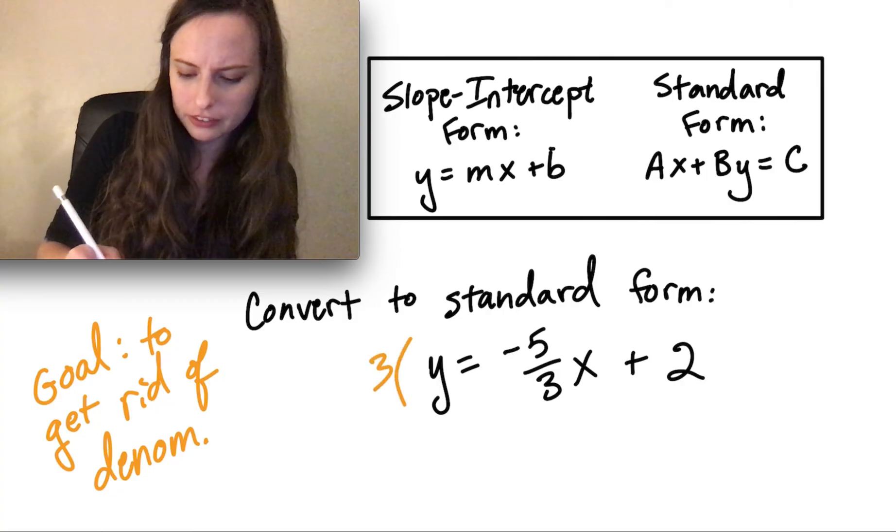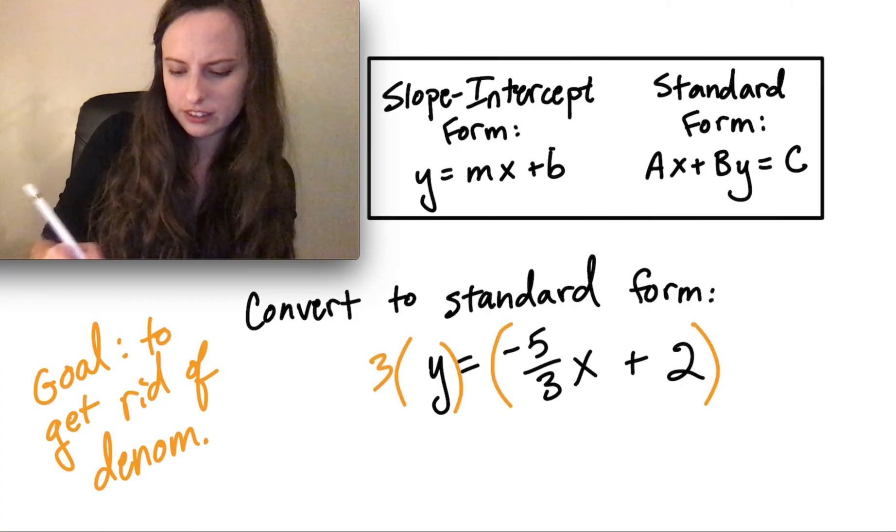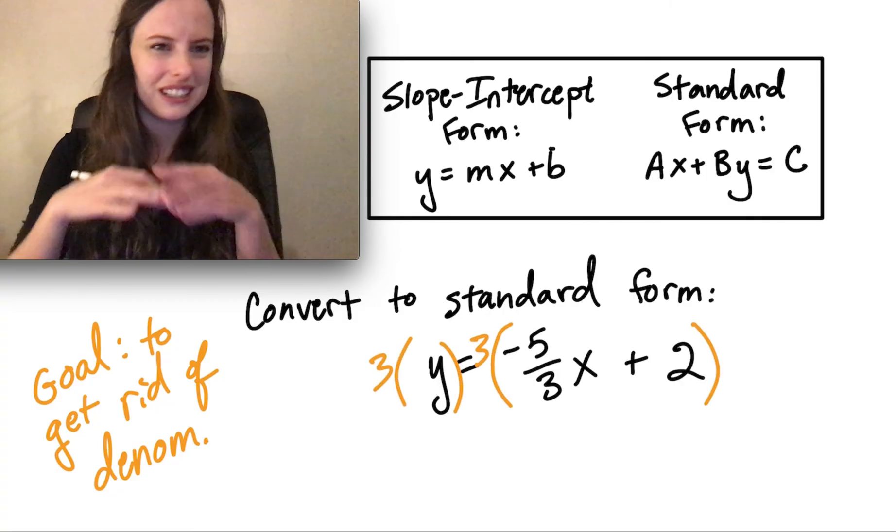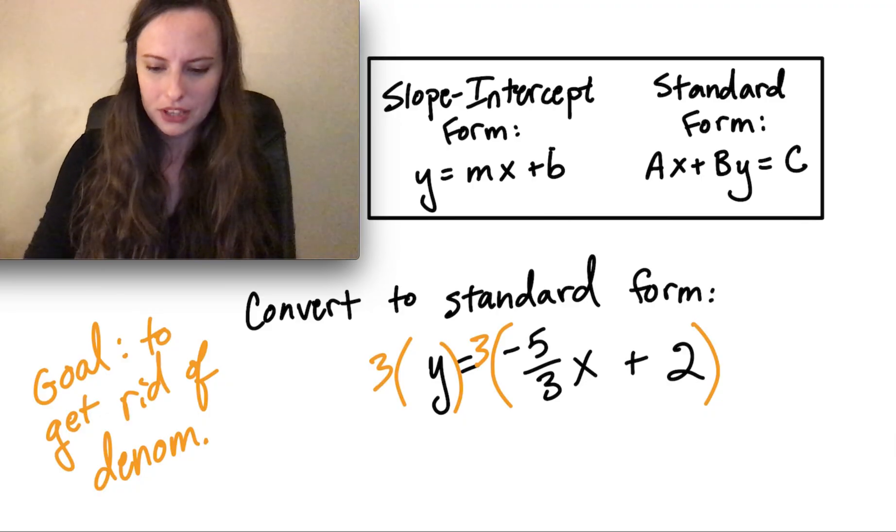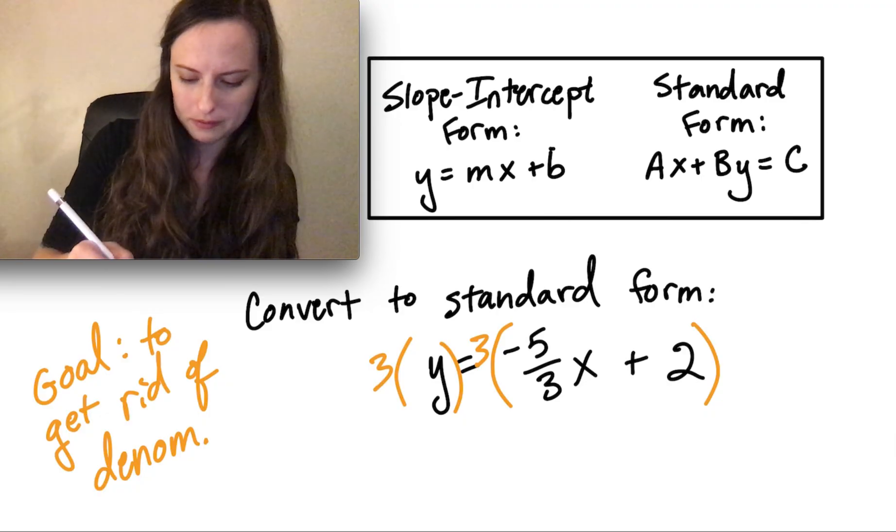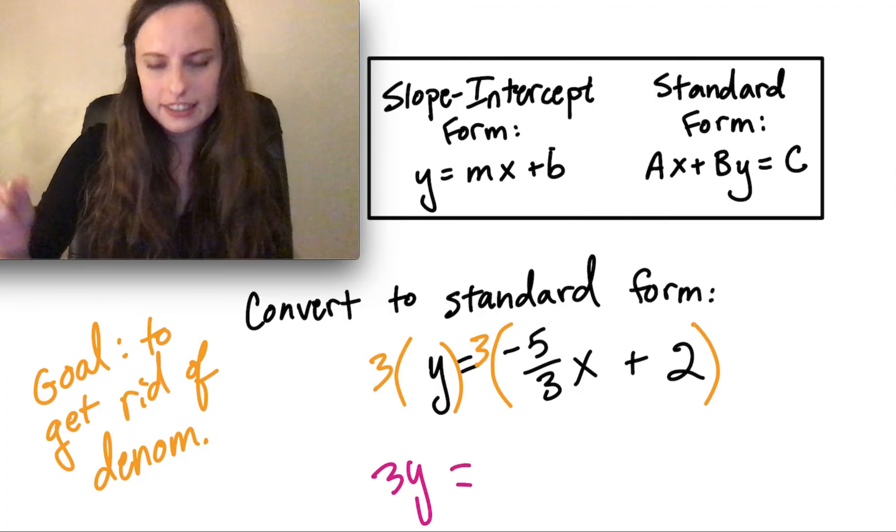And we multiply both sides by that number 3. So multiply the left by 3, multiply the right by 3, and then distribute and simplify. So on the left, we have 3 times y, which is 3y. On the right-hand side, remember...